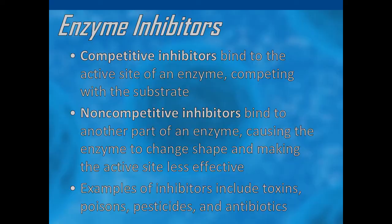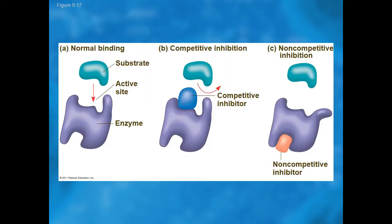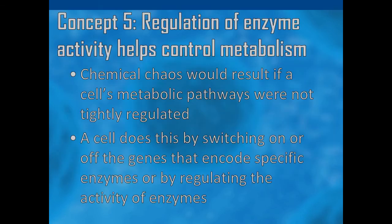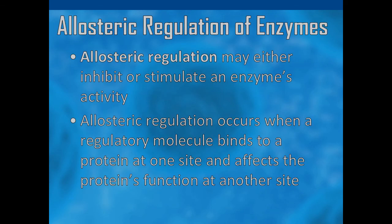The illustration shows how substrates usually bind to the active site of the enzyme, but this is compromised during competitive and non-competitive inhibition. This leads to the need for strict regulation of metabolic pathways — the cell does this by regulating the genetic materials that function as the primary encoders of enzymes. Allosteric regulation refers to the process of modulating the activity of a protein by the binding of a ligand, called an effector, to a site topographically distinct from the active site — whether catalytic, in the case of enzymes, or binding, in the case of receptors.